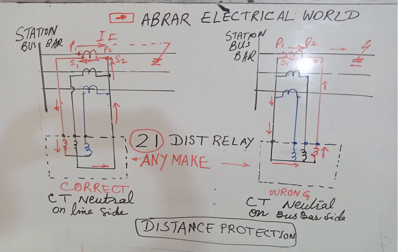Here is the diagram I have drawn on the whiteboard. On the left-hand side it says 'Correct' — CT neutral on line side. On the right-hand side it says CT neutral on busbar side, which is wrong. It is wrong because we are preparing a scheme for distance protection of a transmission line. You can see the transmission line and the fault location. First look at the correct diagram. The dotted points show the polarity of the CT.